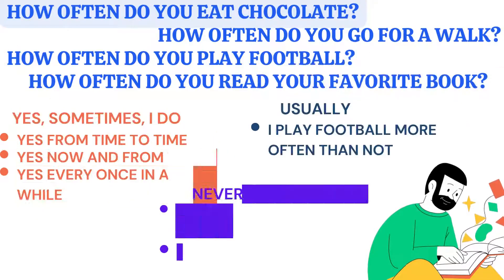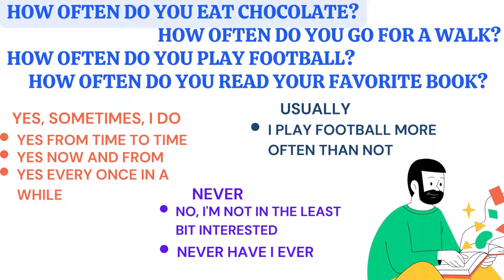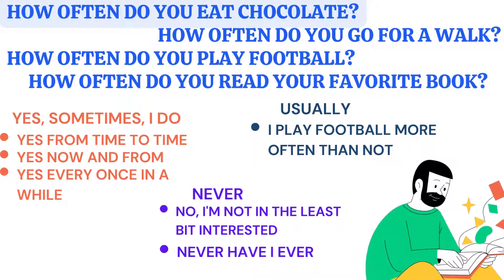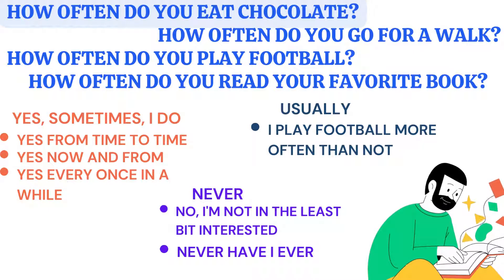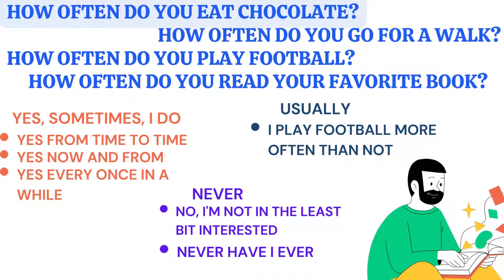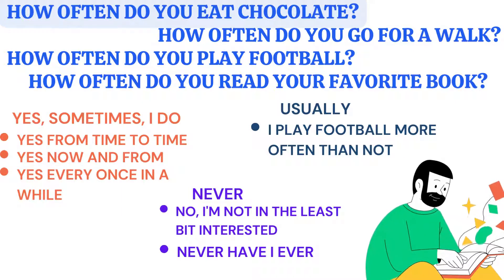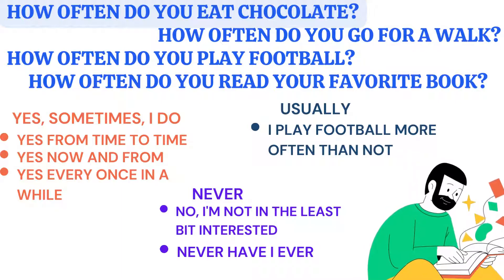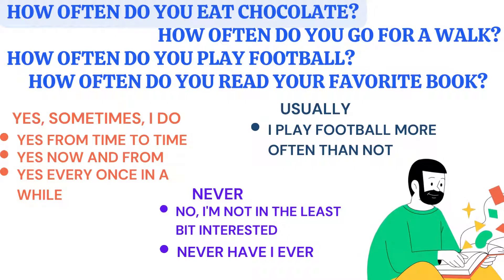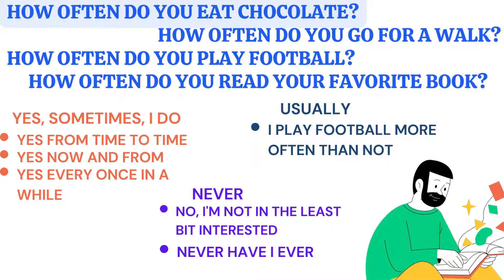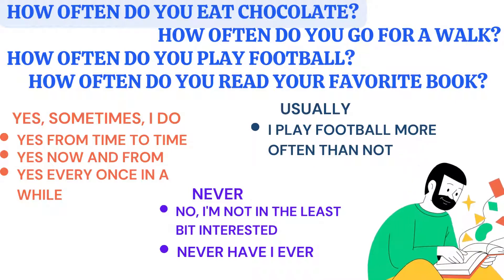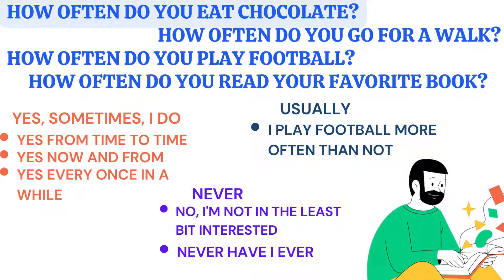Let's get started with 'how often do you do certain things.' For example: how often do you eat chocolate, go for a walk, play football, or read your favorite book? Rather than saying 'sometimes,' you can say 'from time to time,' 'now and then,' or 'every once in a while.' You can also use the single word 'seldom,' which also means sometimes.